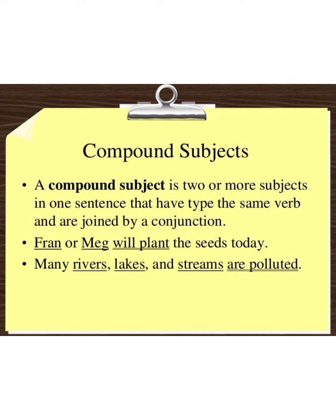For example, if I say 'Muhammad and Rabia are studying,' then Muhammad and Rabia are two compound subjects. So that is called compound subject.